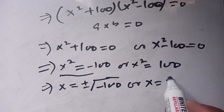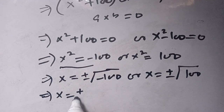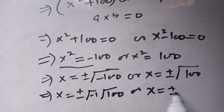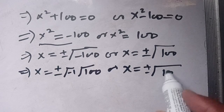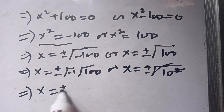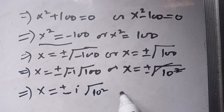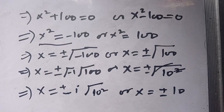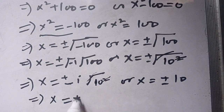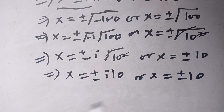Taking square roots, x equals plus or minus the square root of negative 100, or x equals plus or minus the square root of 100. For the first case, we split it as the square root of negative 1 times the square root of 100. Since the square root of negative 1 equals iota and the square root of 100 equals 10, we get x equals plus or minus 10 iota. For the second case, x equals plus or minus 10.